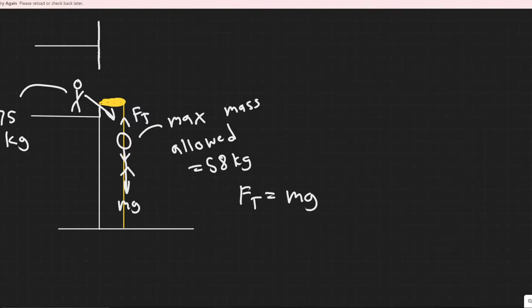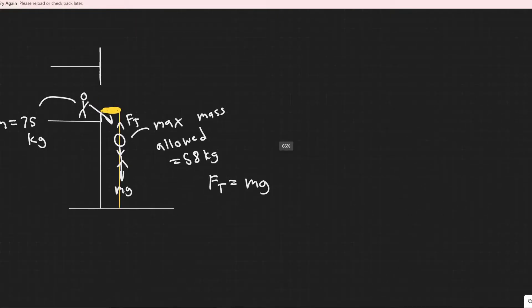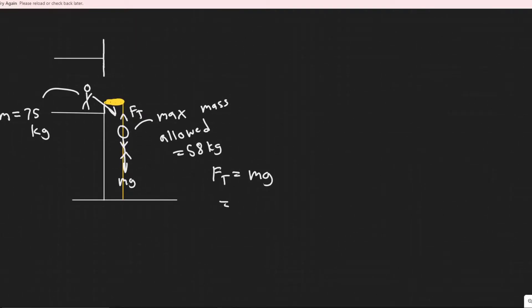And so what would be the maximum force or the tension force in this cable or these sheets here? Well, we know in this case, the force of tension, the only thing pulling down on it is the force due to gravity. So essentially, the force due to tension is just the mass of the person times gravity, since that's the only thing pulling it down.